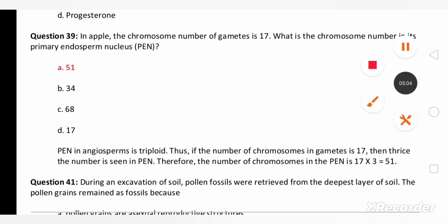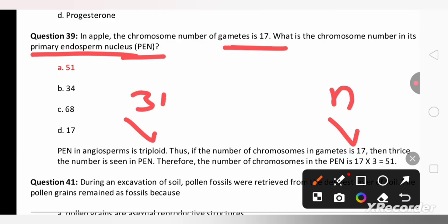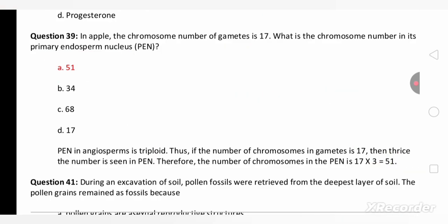In apple the chromosome number is 17. What is the chromosome number in its primary endosperm nucleus? So we should know that primary endosperm nucleus is triploid. Thus the number of chromosome in the gametes is 17. Gametes are haploid and PEN is triploid. So if you multiply 3 times 17 you will get 51. So 51 is the right answer for this question.